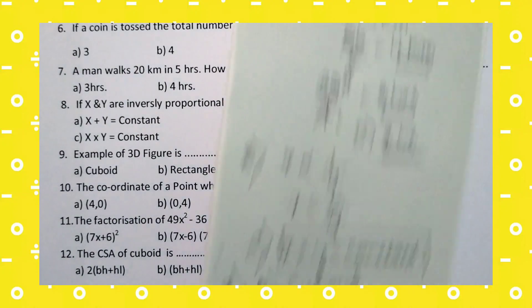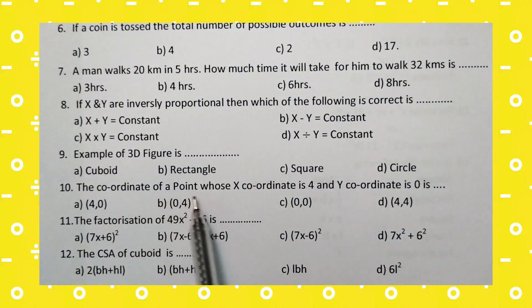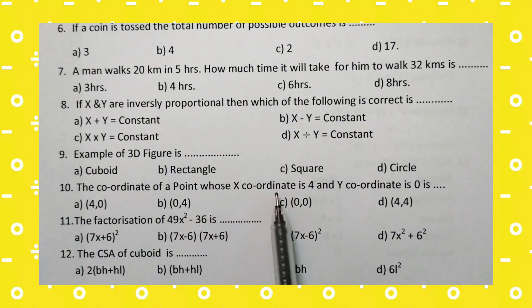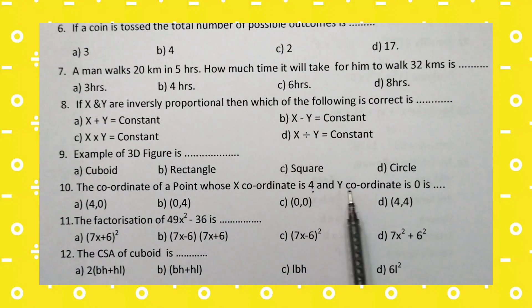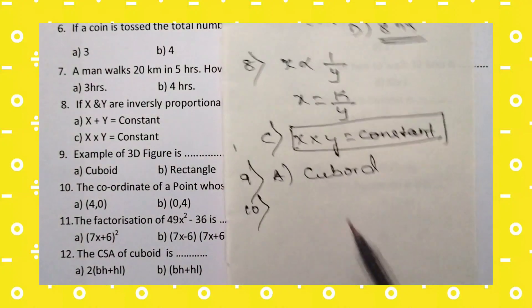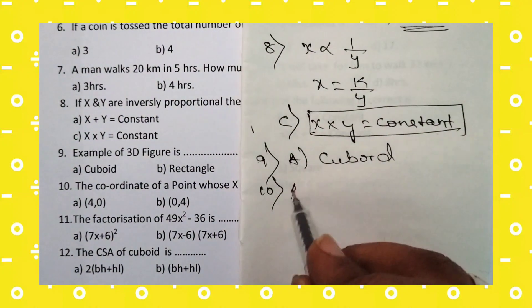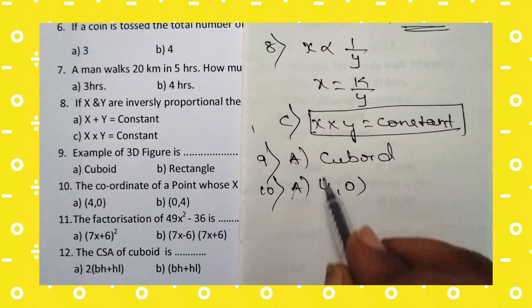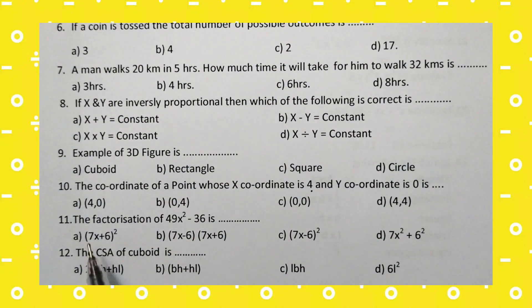Coming to the 10th question: the coordinates of a point whose x-coordinate is 4 and y-coordinate is 0. In coordinate notation, x comes first then y. So the answer is (4, 0). Option A — (4, 0) — is the right answer.